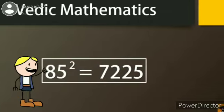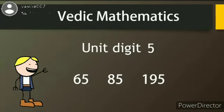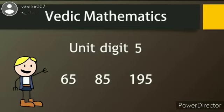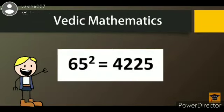That's simple. Now, you will do one sum. Find the answer for 65 square. Your 5 seconds starts now. Here is the answer. If you got the answer correctly, comment in the comment box.